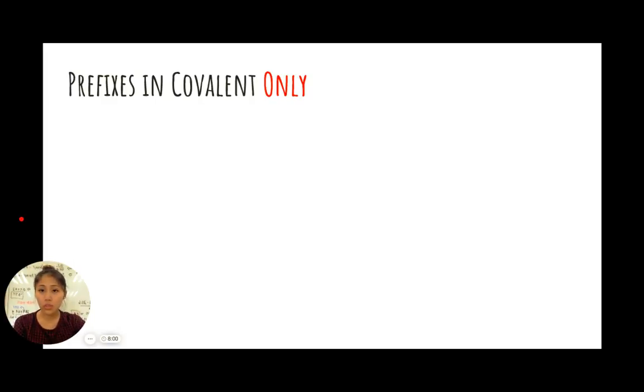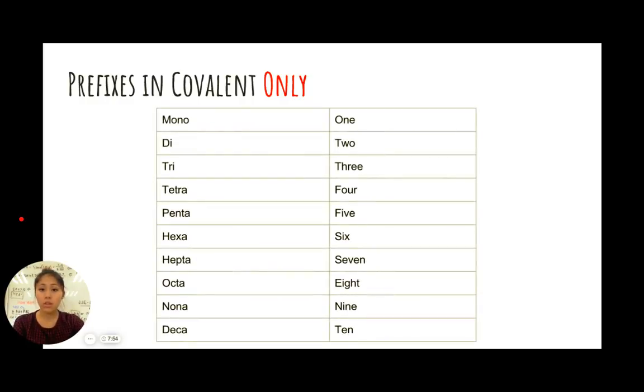Covalent bonds use things known as prefixes. They are only found in covalent bonds. Here are the prefixes that are most commonly used.